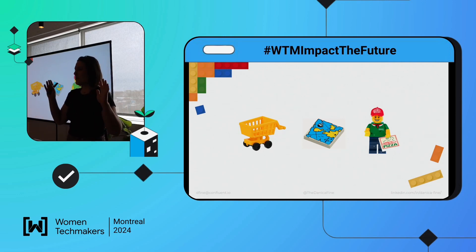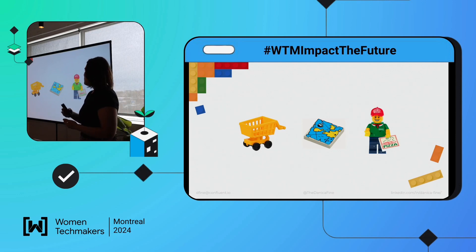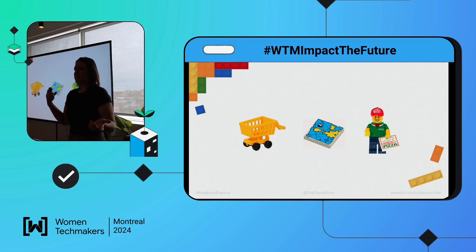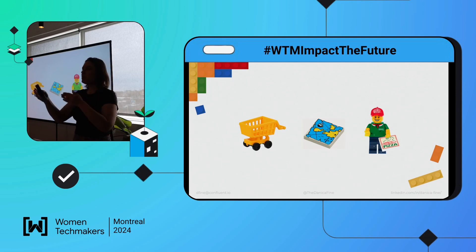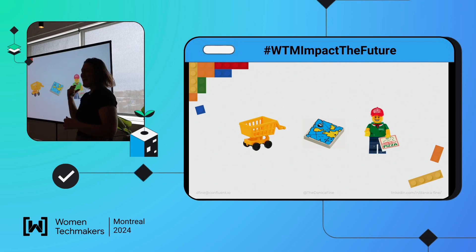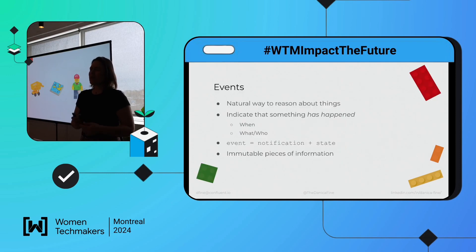An event can be anything — we're crossing all different industries here. For e-commerce, the act of adding something to your cart is an event. For shipping and logistics, where a ship is currently located on the open sea — that's an event. The act of calling and placing a pizza order — that's an event. Regardless of what your events actually are, a really important part of them is that they're meant to be immutable.